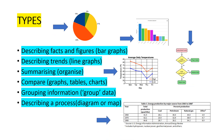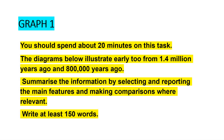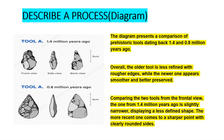So let's go ahead and practice a few questions. The first graph we are going to be discussing is a diagram. You should spend about 20 minutes on this task. The diagrams below illustrate early tools from 1.4 million years ago and 800,000 years ago. Summarize the information by selecting and reporting the main features and make comparisons where relevant. Write at least 150 words.